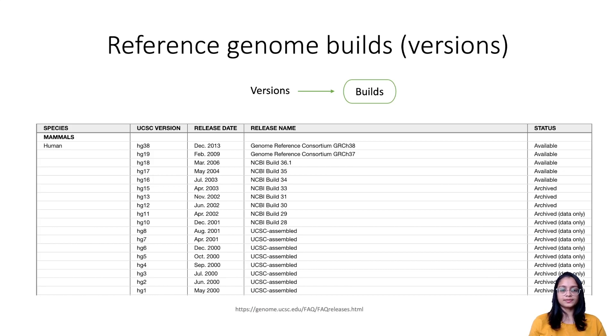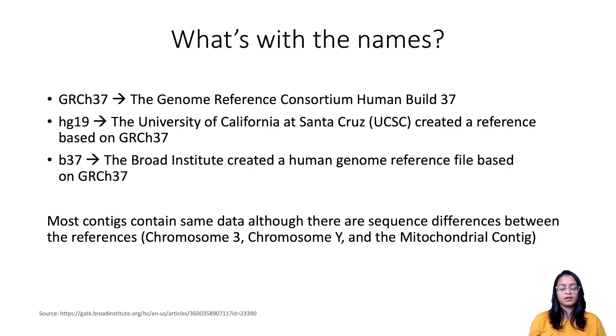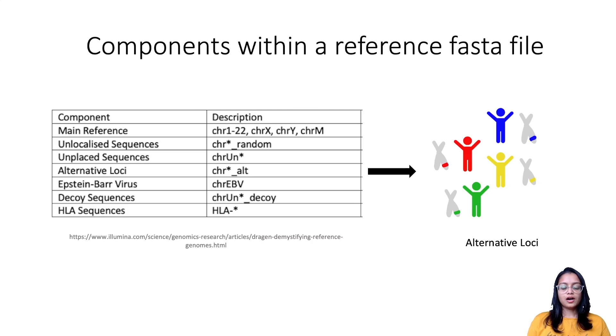Oftentimes there's a confusion regarding the naming of these reference genomes. So here I'm using an example of an earlier version of the human reference genome. GRCh37 is a reference that is built by Genome Reference Consortium and this is a baseline human genome reference that serves as the basis for the other two references here in the comparison. hg19 is a reference that is created by UCSC, that is University of California at Santa Cruz, and that is based on GRCh37. b37 is a reference that is created by the Broad Institute, and the reference it is based on is GRCh37. These three are often called as hg19 references, but they're not directly interchangeable as there are differences in sequences between these references in certain chromosomal regions.